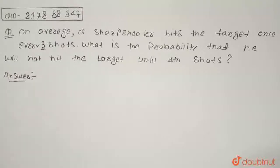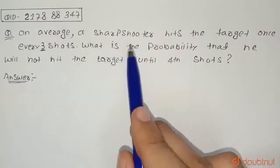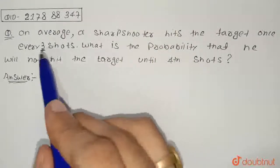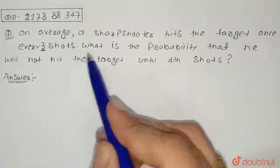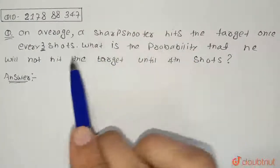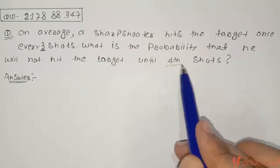Hello students, here is the question. On average, a sharpshooter hits the target once every third shot. So what they're asking: what is the probability that he will not hit the target until fourth shot?